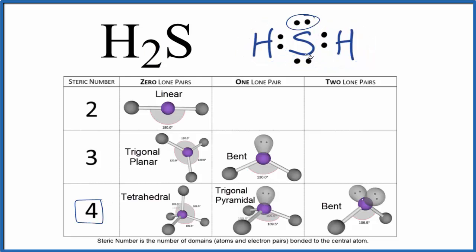And of those, we have two lone pairs. So we go two lone pairs over here. We have a bent molecular geometry for H2S. The ideal bond angle here is 109.5 degrees.